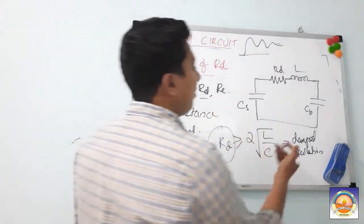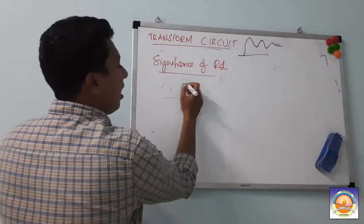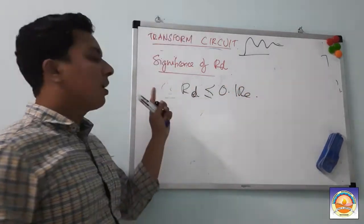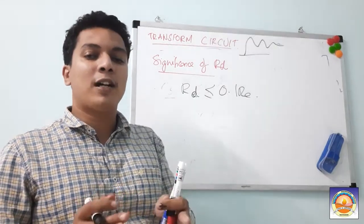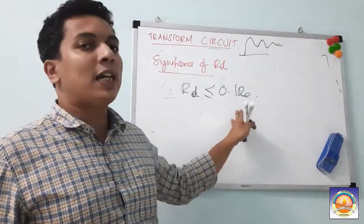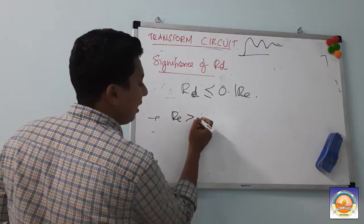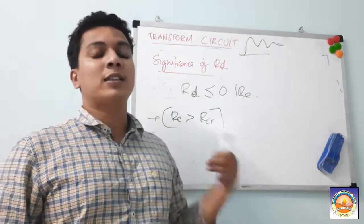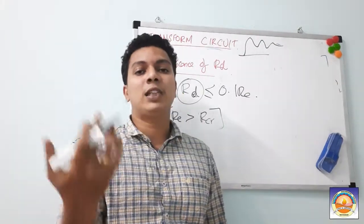For the discharge circuit, since Re is already 10 times greater than Rd, Re will always exceed the critical resistance — so no oscillation concern there. We only need to worry about the charging circuit. That is the significance of Rd as the damping resistor. In the next class, we will see multi-stage impulse generators in detail.